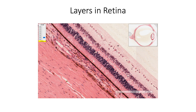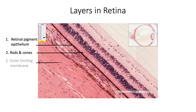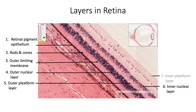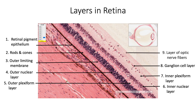The ten layers are: the layer of retinal pigment epithelium, layer of rods and cones, outer limiting membrane, outer nuclear layer, outer plexiform layer, inner nuclear layer, inner plexiform layer, ganglion cell layer, layer of optic nerve fibers, and lastly, the inner limiting membrane.